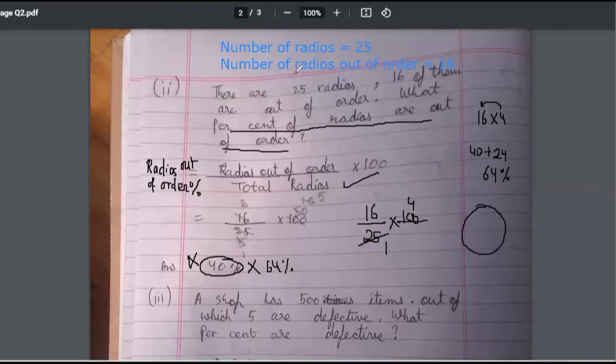So there were 25 radios. You are saying 40 percent. 40 percent means it is less than 50 percent, isn't it? What is half of 25? Somewhere around 12.5.